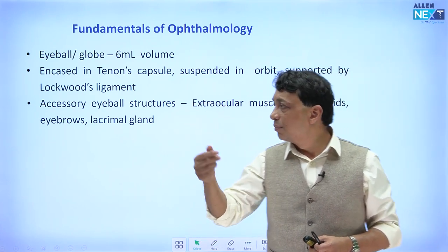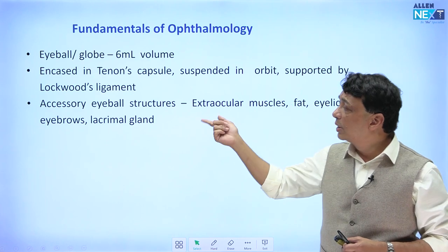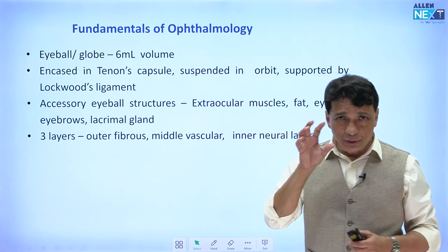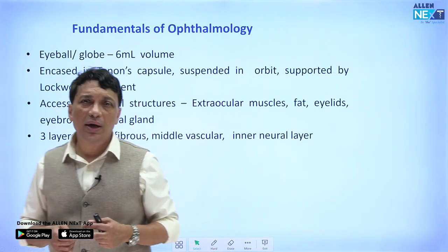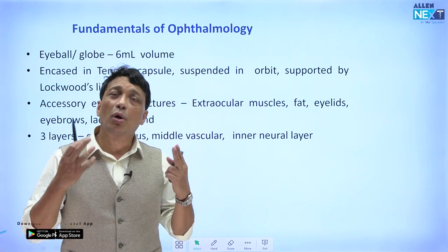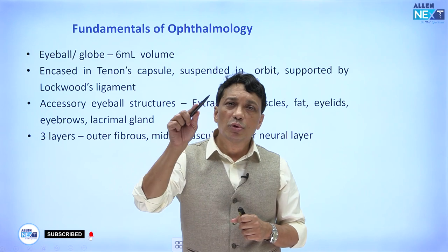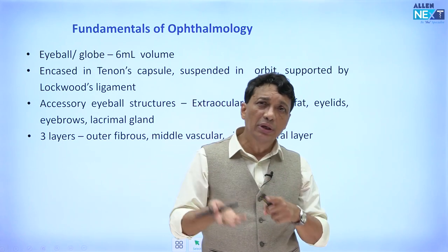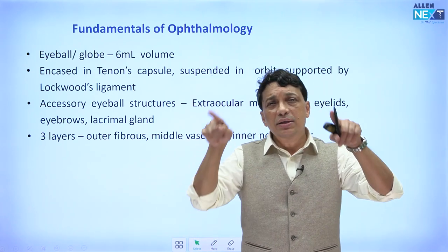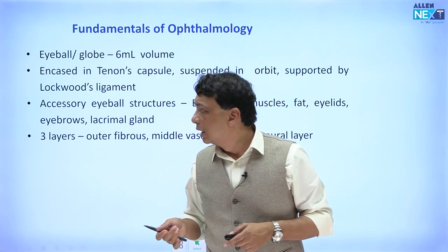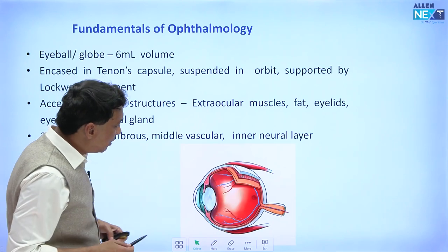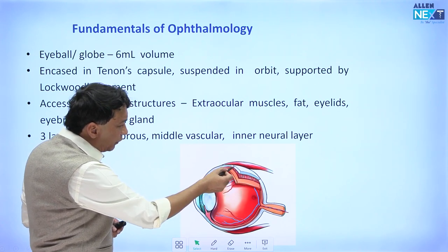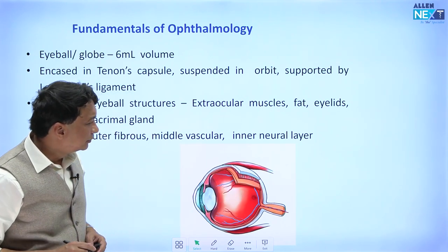The accessory eyeball structures — the muscles, fat pads, eyebrows, and lacrimal gland — surround the eyeball within the orbit. The eyeball has three layers: the outermost fibrous layer, the middle vascular layer, and the inner neural layer. These are in concentric layers like nesting dolls. The outer layer is the cornea-sclera, the middle is the uvea, and the inner is the retina.